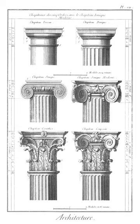Area steps: the steps between street level and a basement. Arris: sharp edge where two surfaces meet at an angle, such as the corner of a square column or shaft.